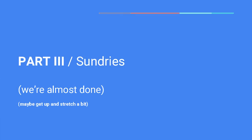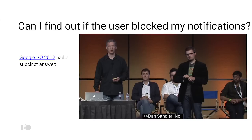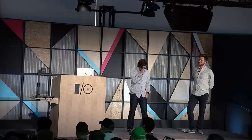At Google I/O 2012, when we first introduced rich notifications with Jelly Bean, we also introduced the ability for users to block notifications they found inappropriate or spammy. Somebody asked from the mic: as an app, can I find out when the user has blocked my notifications? And the answer was no. Now, in N, there's a real API for this: NotificationManager.areNotificationsEnabled().